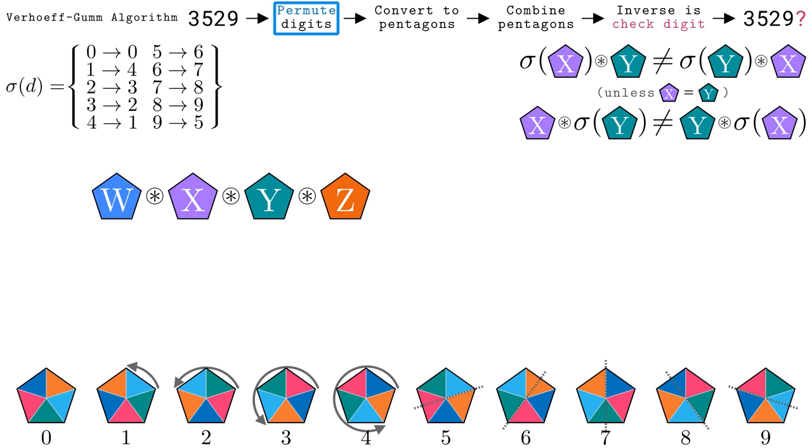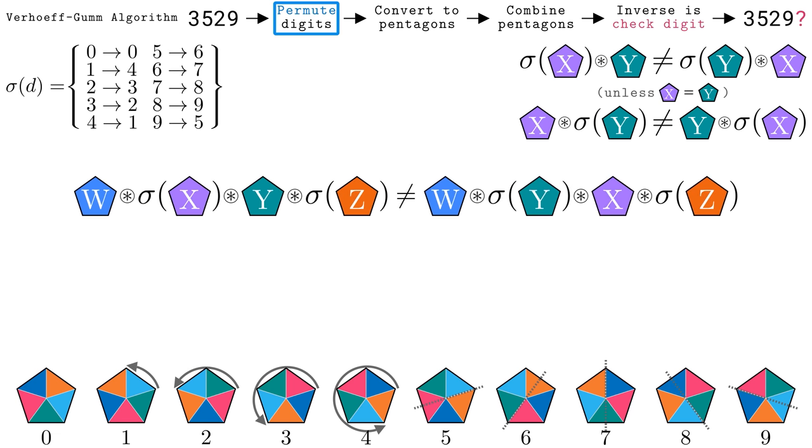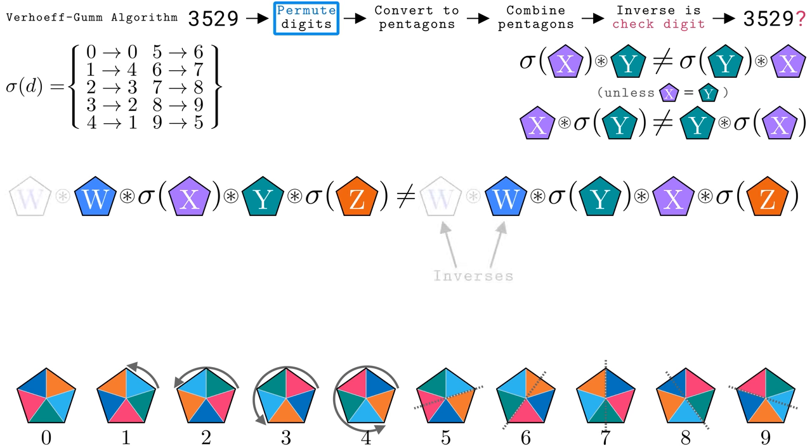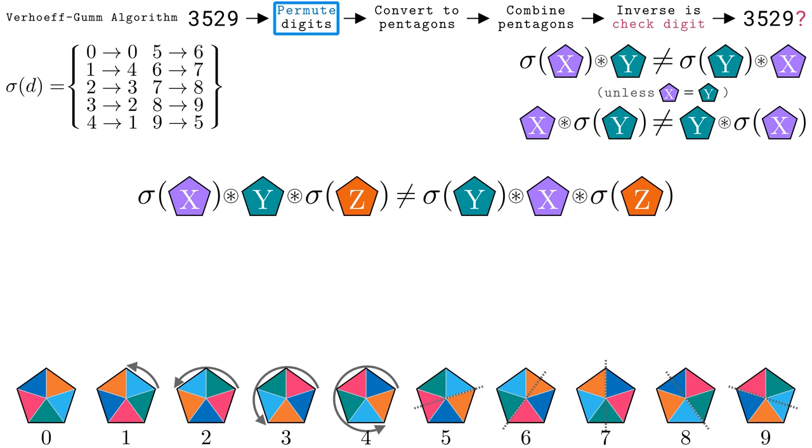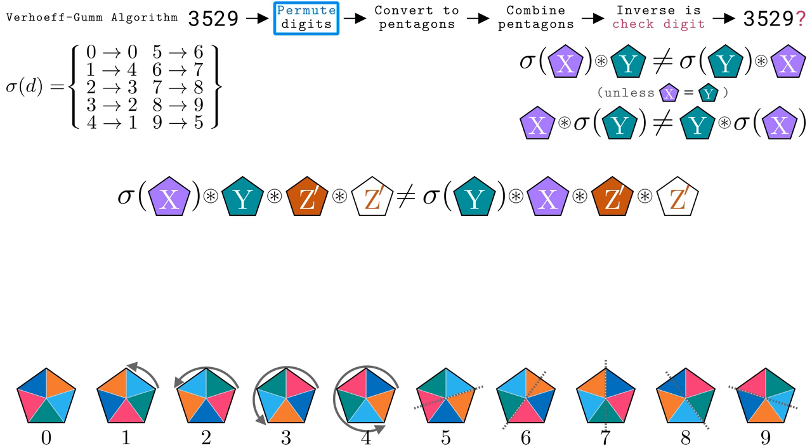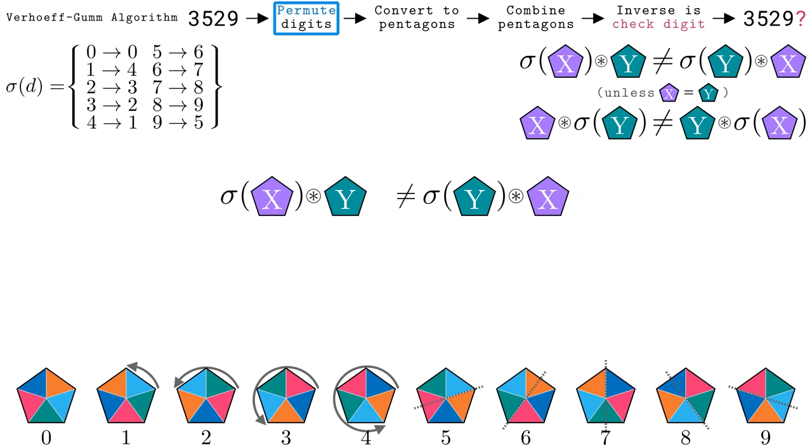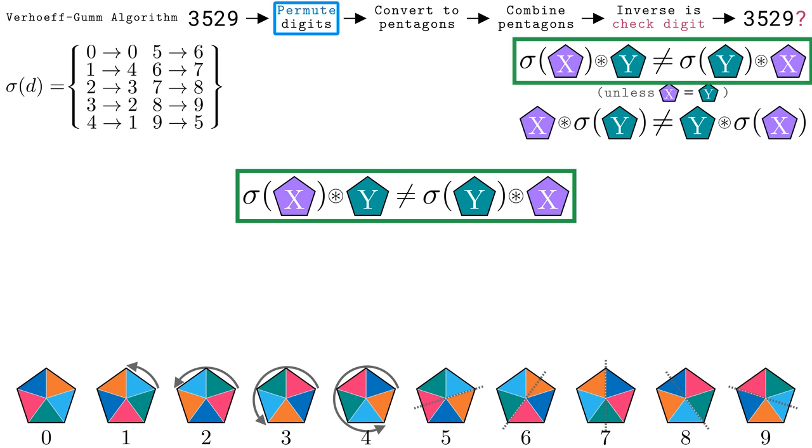With these two facts, we can take inspiration from the Luhn algorithm and apply the sigma function to every other pentagon. If the middle two pentagons were transposed, we want the result to change so we can detect the error. Even though these are shapes, combining them is associative, which allows us to use familiar algebraic techniques. Specifically, we can add the inverse of the leftmost pentagon to both sides. Combining a pentagon and its inverse results in the zero pentagon, which is effectively no operation. To cancel out the rightmost pentagon, we can first evaluate the sigma operation, turning pentagon z into some other pentagon z prime. Then, we can add the inverse of z prime to the right of both sides, which combines to the zero pentagon, leaving us with just two pentagons, which we have proved will change when transposed.